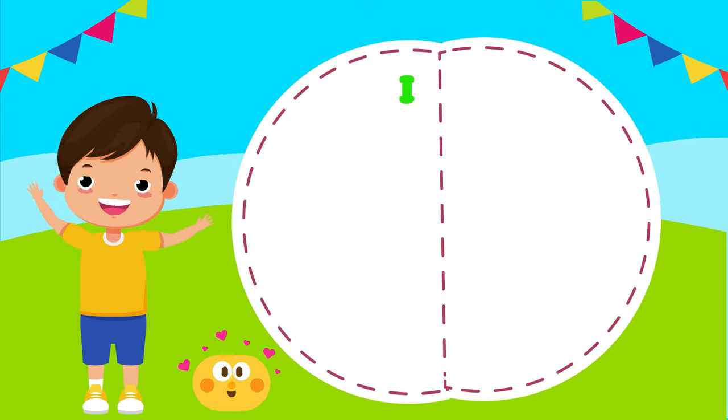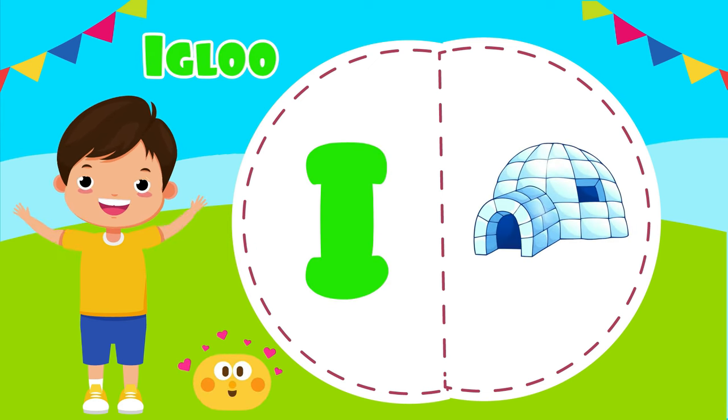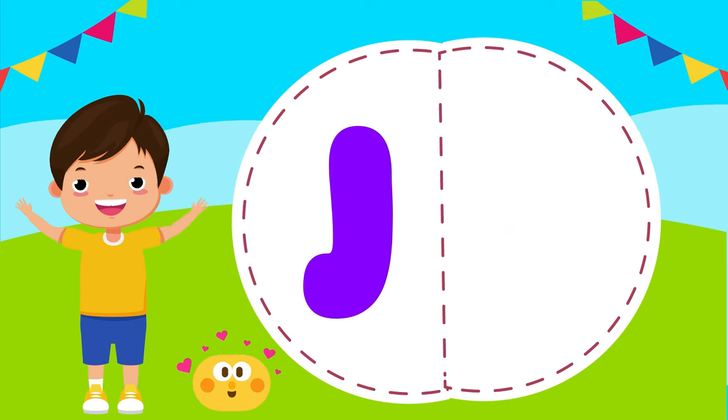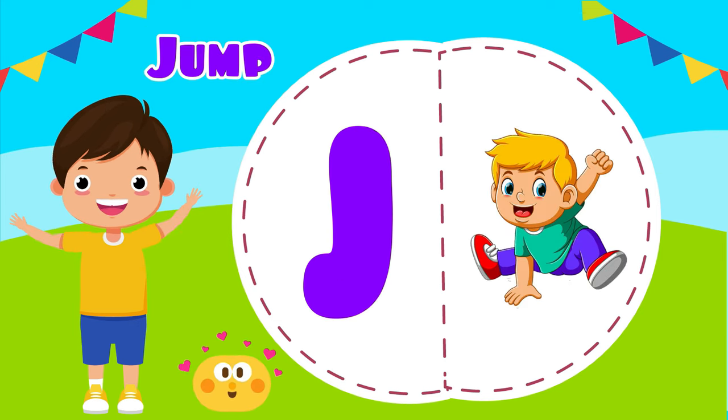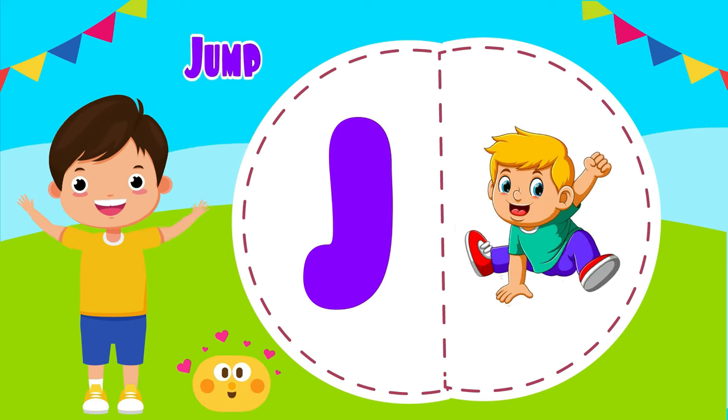I is for igloo, i-i-igloo. J is for jump, j-j-jump.